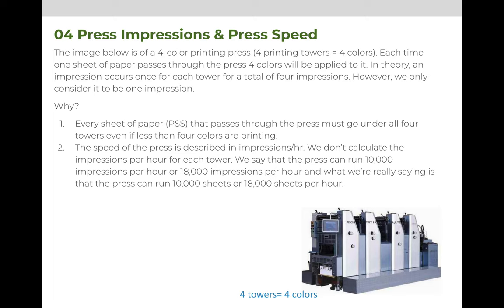The image below is of a four-color printing press. Four towers means four colors. So each time one sheet of paper passes through the printing press, four colors can be applied to it. So again, in theory, an impression occurs one, two, three, four times as the sheet of paper is going through the press. However, because it is a four-color press, we would only consider that to be one impression.